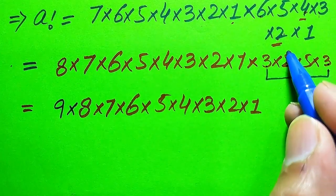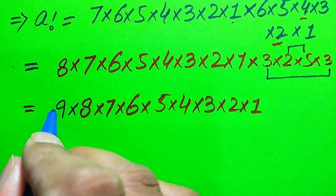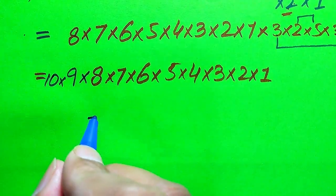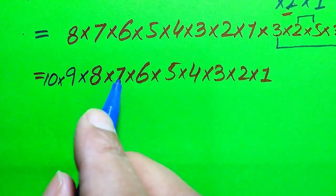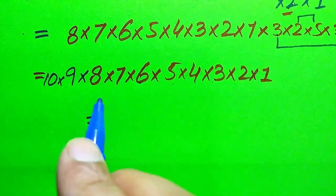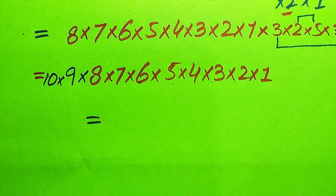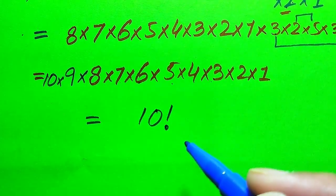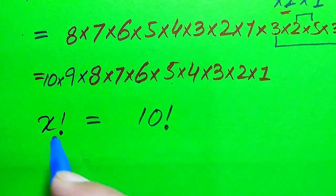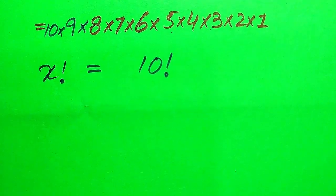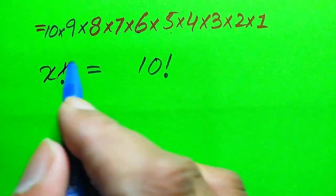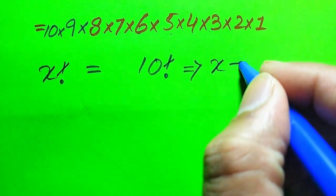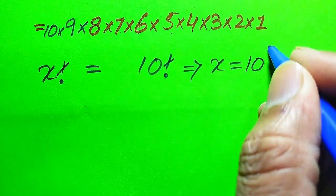Then 2 × 5 = 10, so we write 10 here. Now we have 10 × 9 × 8 × 7 × 6 × 5 × 4 × 3 × 2 × 1, which by the factorial definition becomes 10 factorial. On the left hand side we have a factorial, so the factorial signs cancel and we get a = 10.